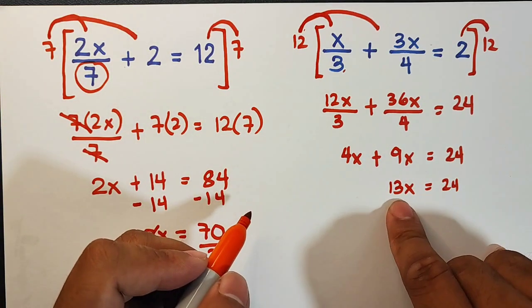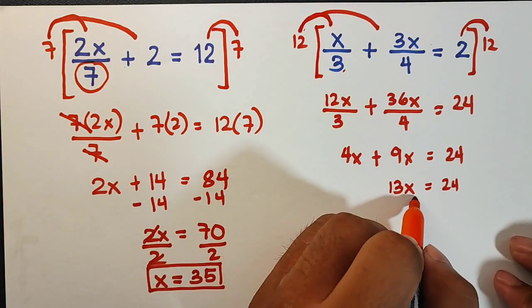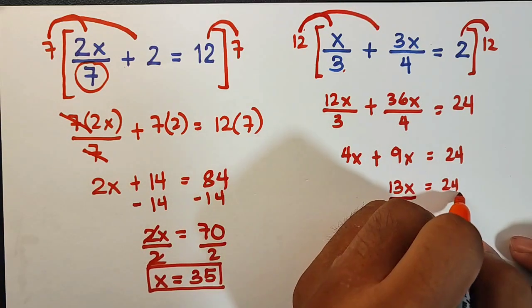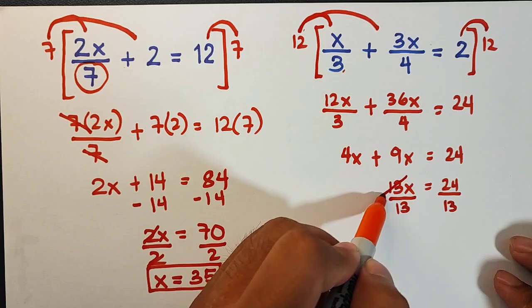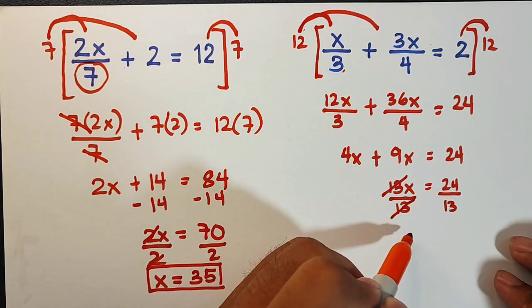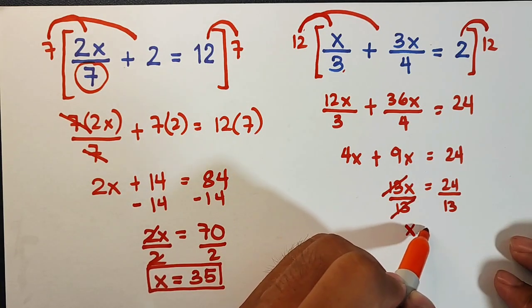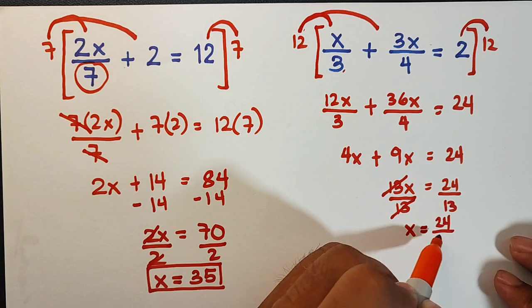So after that, as you can see what remains here is 13, so we will divide both sides of the equation by 13. We can cancel out this one, so what we have now is x is equal to 24 over 13.